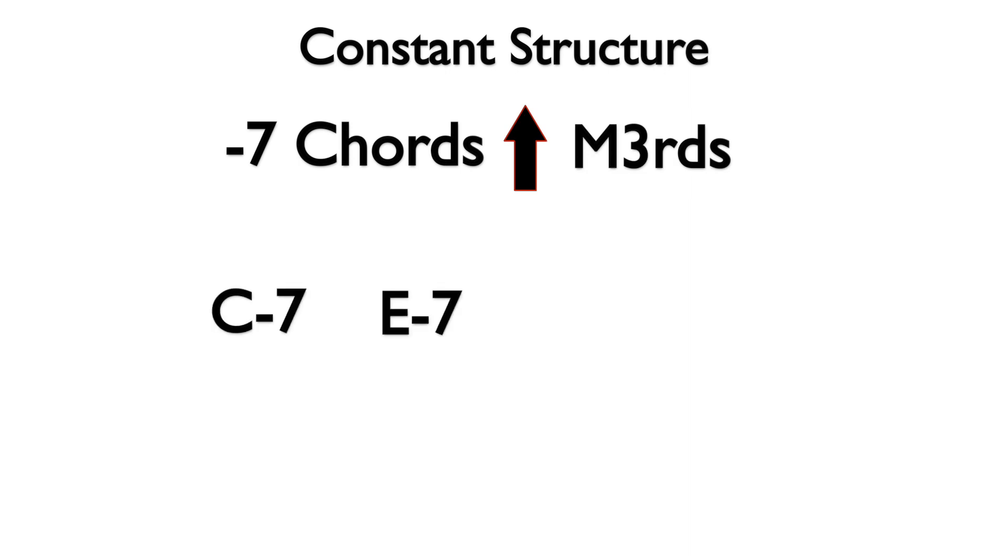Here is an example using minor 7th chords in major 3rds: C minor 7, E minor 7, A flat minor 7, to C minor 7. Here is the sound of this progression.